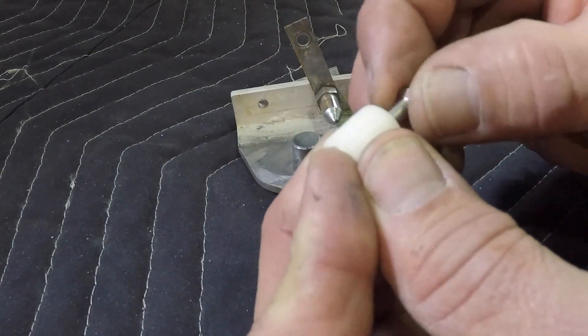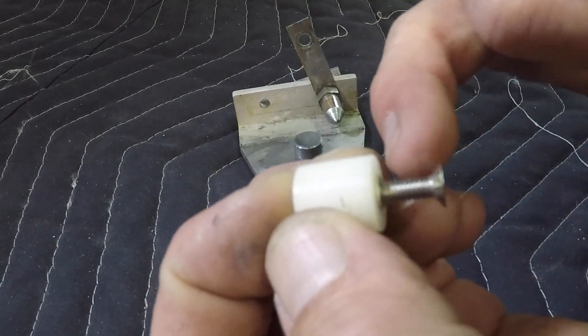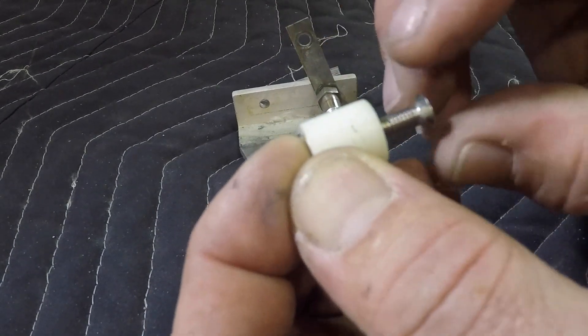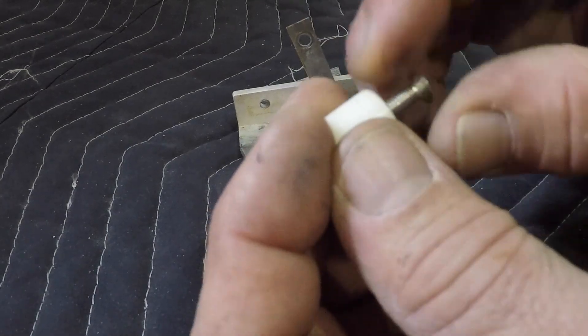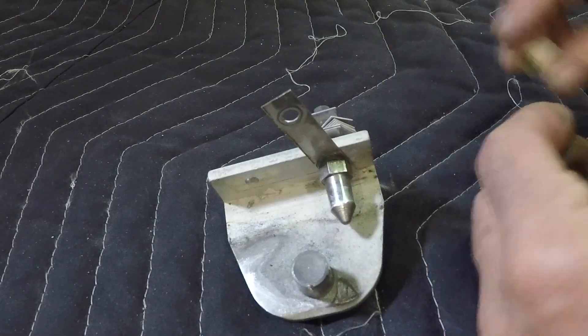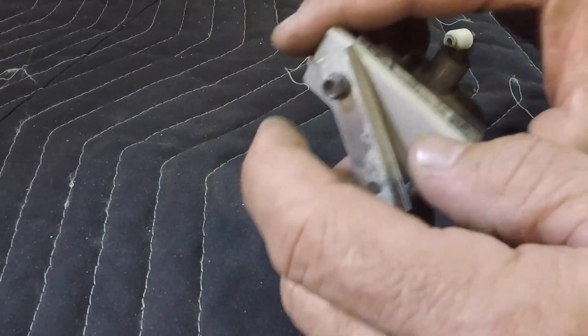You'll notice that the rev nut is proud a little bit of the nylon, and that's because this will always spin. And this is how it's supposed to come in through there, but we're going to leave this alone.